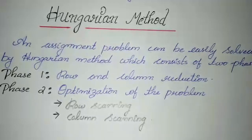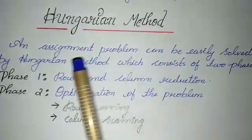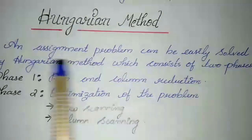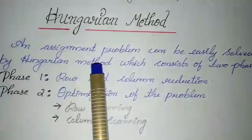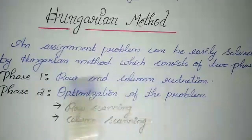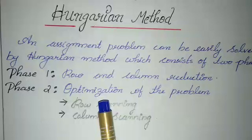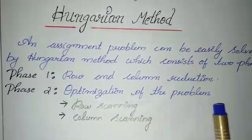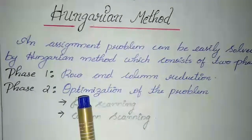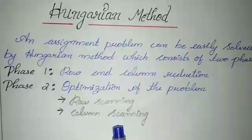Here I am discussing the Hungarian method of solving the assignment problem. An assignment problem can be easily solved by the Hungarian method, which consists of two phases. Phase 1 is row and column reduction. Phase 2 is optimization of the problem, where row scanning and column scanning are the main methods.